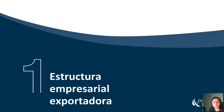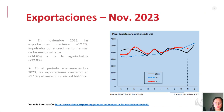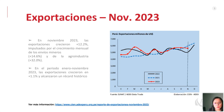Para formular estrategias y fortalecer capacidades, hay que ver las cifras que son importantes. Vamos a ver la estructura empresarial exportadora con información actualizada. Dentro del panorama que estamos visualizando en el gráfico, entre las exportaciones para noviembre se ha visto un crecimiento mensual de 14.6% por envíos mineros y en agroindustria un 32%. En conjunto, el periodo de enero a noviembre del año pasado, las exportaciones crecieron en 1.1%, alcanzando un registro histórico.